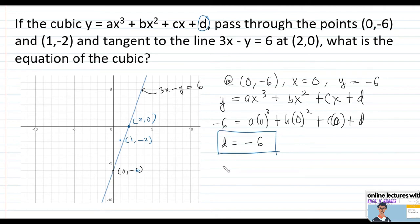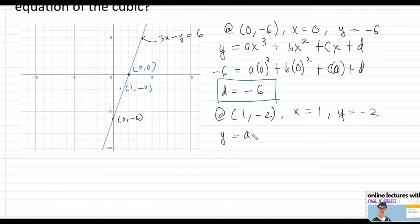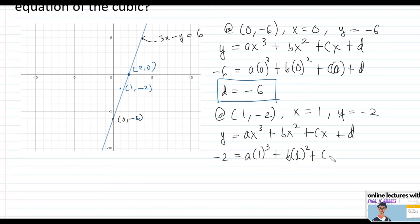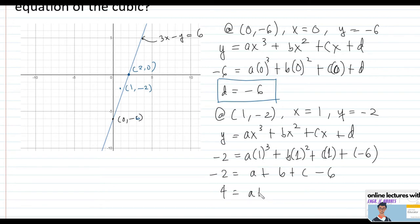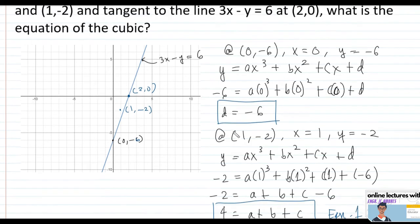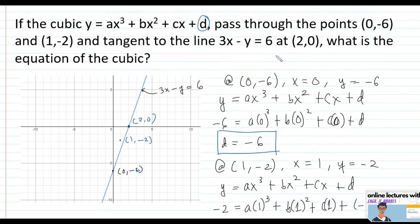Substituting point (1, negative 2) into the cubic with d equals negative 6: negative 2 equals a plus b plus c minus 6. Transposing gives a plus b plus c equals 4. This is Equation 1.